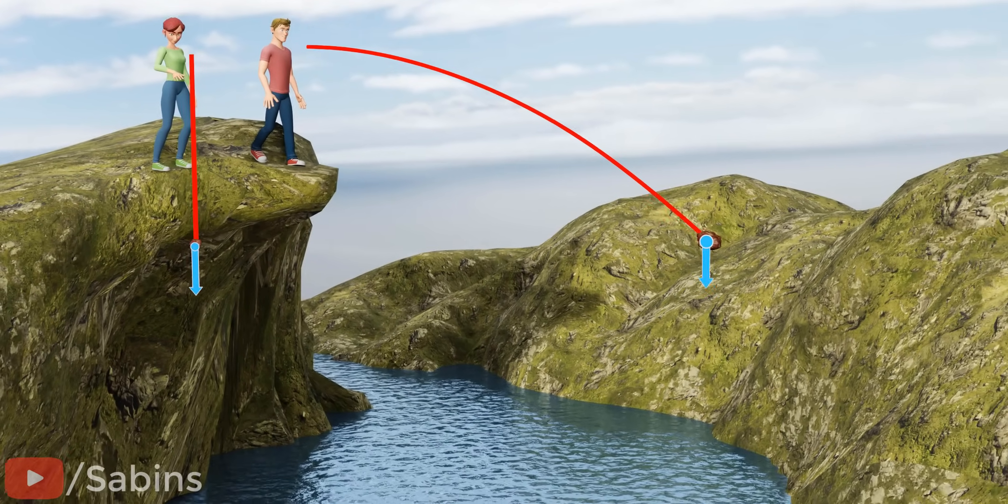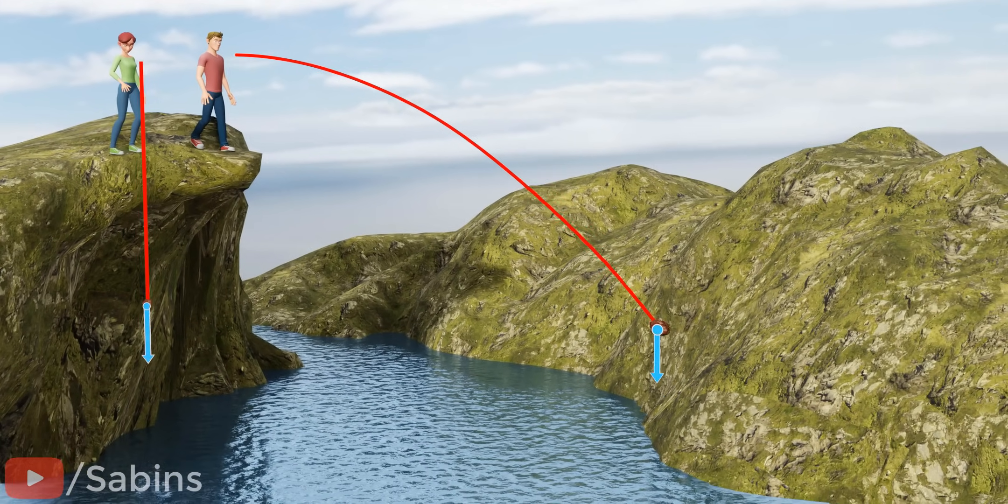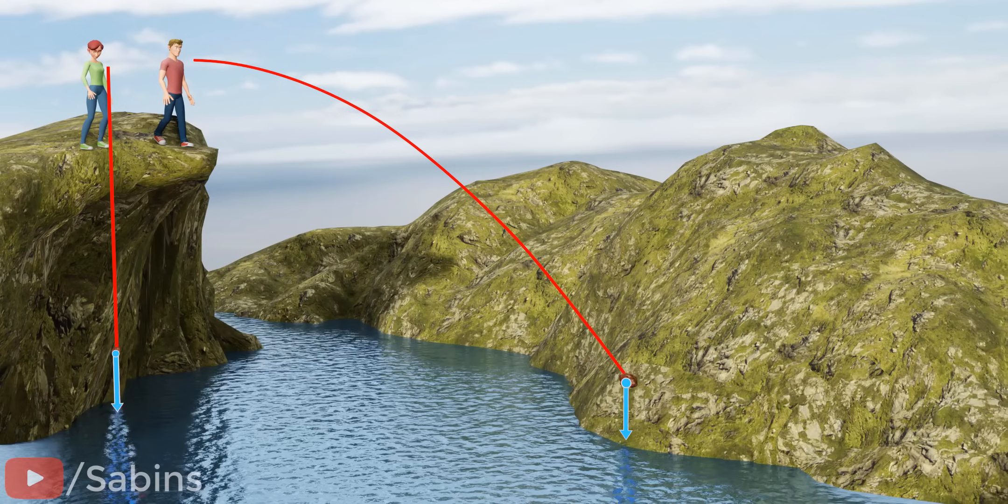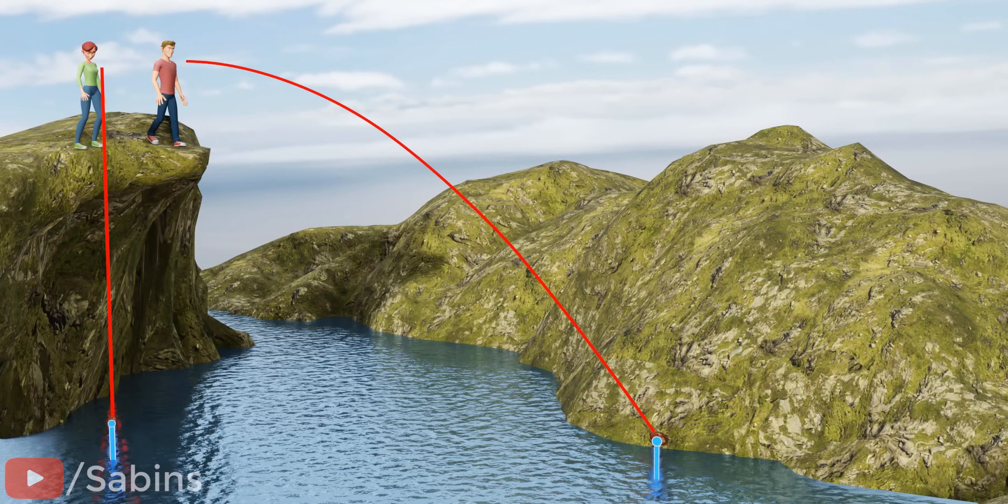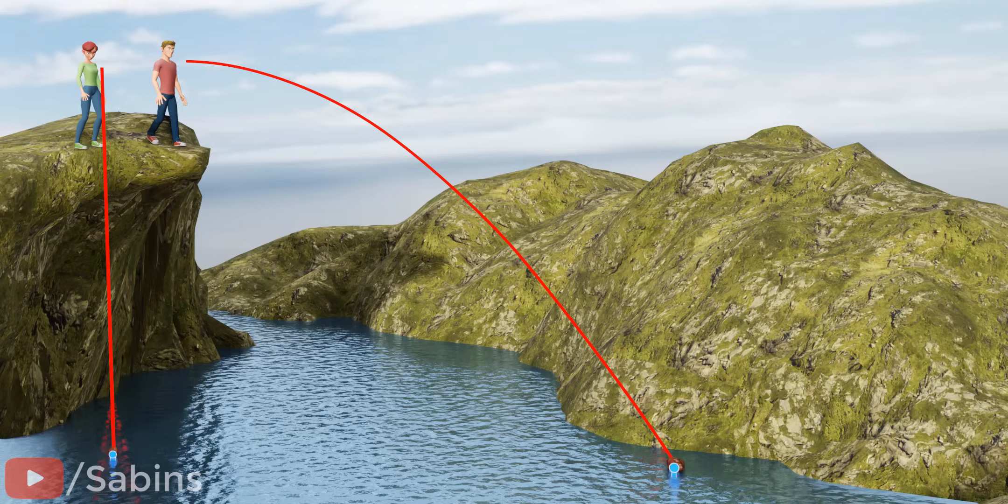But with the same magnitude. This means the vertical component of velocity of both stones is the same throughout their travel. Therefore, both will hit the ground at the same time.